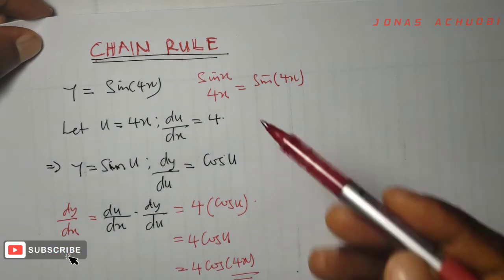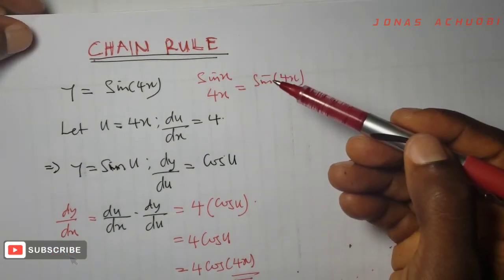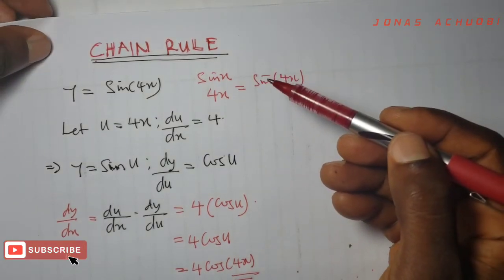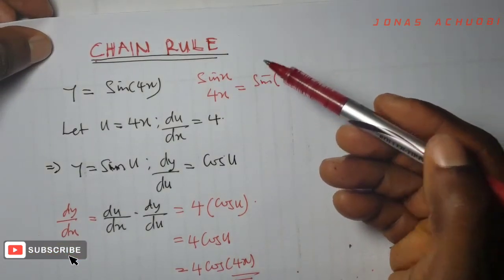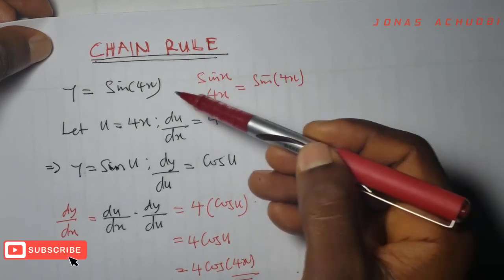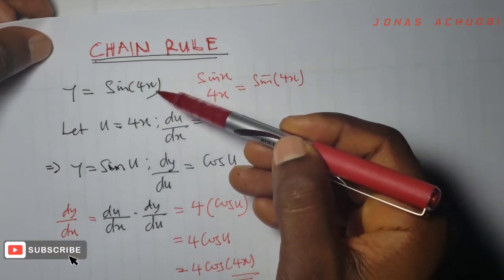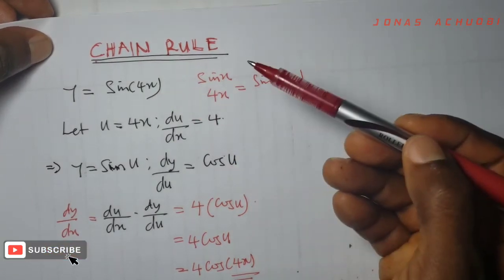And that is what we call the Leibniz rule — in other words, the chain rule of differentiation. Of course, this composition of functions could involve more than two functions.